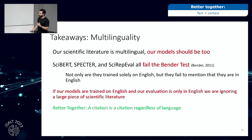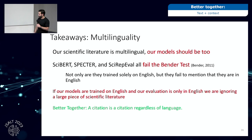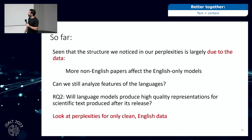The takeaways: our scientific literature is multilingual, and our models absolutely should be too. SciiBERT, Specter, and CyREP eval all fail the Bender test — they are trained solely on English and fail to even mention that. If our models are trained on English and our evaluation is only in English, we're ignoring a large piece of scientific literature. This fits into the Better Together story: a citation is a citation regardless of language, and the graph is invariant to language.